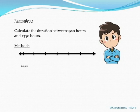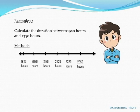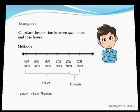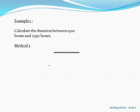Example 1: Calculate the duration between 19:20 hours and 23:50 hours. Below are two methods that you can try to get the answer. Method 2: You can also use the standard written method as shown.